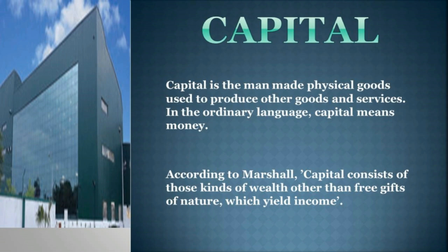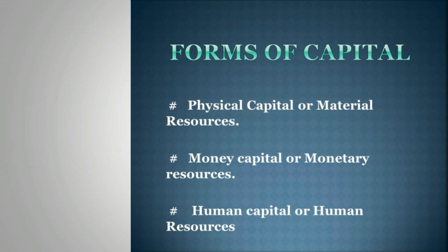Capital. Capital is the man-made physical goods used to produce other goods and services. In ordinary language, capital means money — that is, money invested for a business. According to Marshall, capital consists of those kinds of wealth other than free gifts of nature which yield income. Forms of capital: physical capital or material resources (e.g., money invested in machinery, tools, buildings); money capital or monetary resources (e.g., bank deposits, shares, and securities); and human capital or human resources (e.g., investment in education, training, and health).